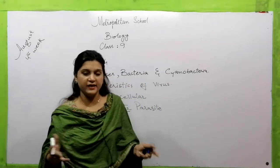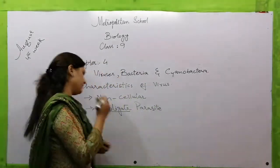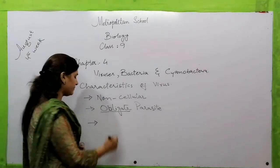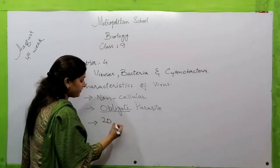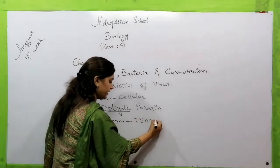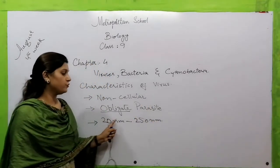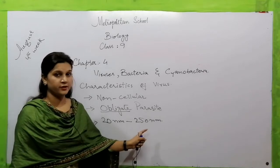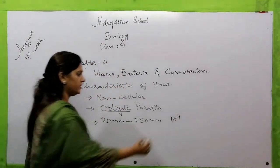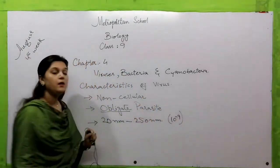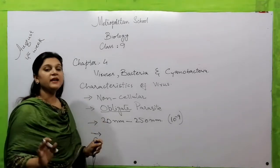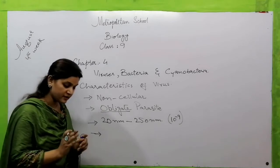The size of viruses varies from 20 nanometers to 250 nanometers. Nanometer stands for 10 to the power of minus 9. So viruses range in size from 20 nm to 250 nm.